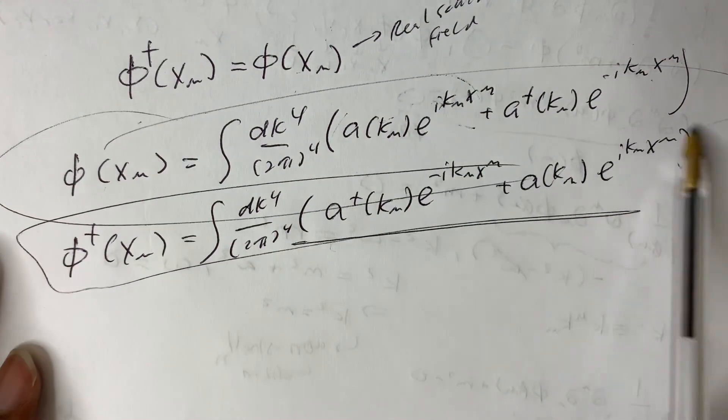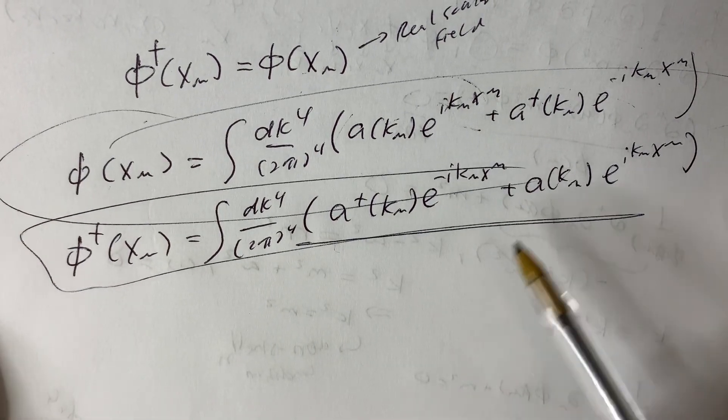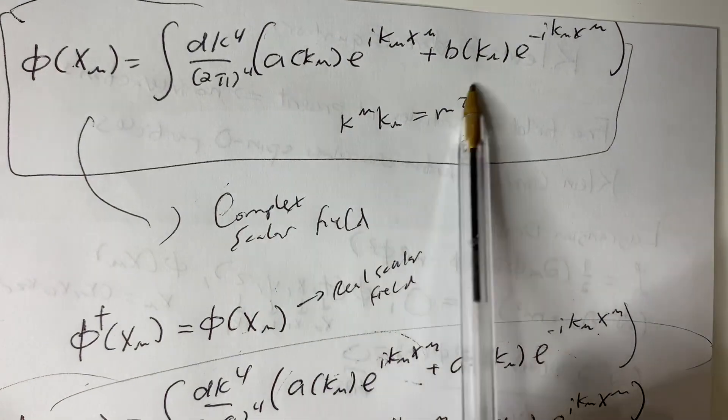And we can verify how these two things are actually the same expression, they are equal to each other. So that's why this is a form of a scalar field that is real, versus complex scalar field. It's a bit more interesting, we have a k mu and then b k mu.